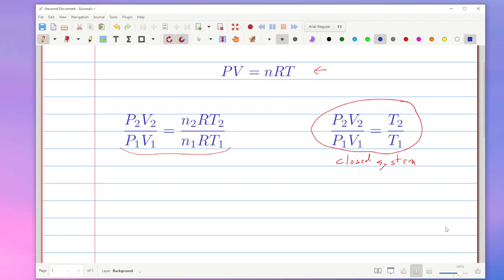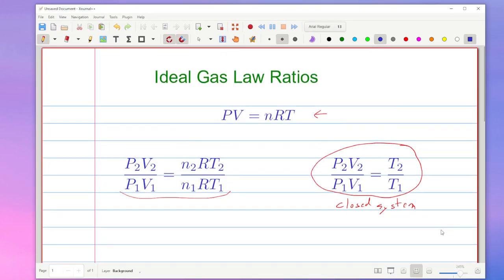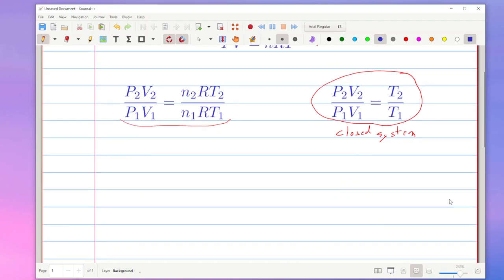So this is the second video talking about ideal gas law ratios. I had one video that explained the general concept and then one where we did constant pressure. As a very similar thing I'm going to talk about what if I have constant volume, meaning V1 is equal to V2.